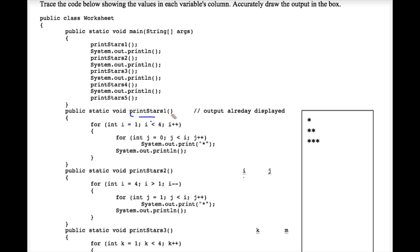I'm going to trace the next piece of code. Let's trace print_stars_2. Because of this system.out.print right here, our cursor is now blinking, not on the very next line of output, but poised and ready to print right there. We did a println which moved us down, and then when the computer executed this system.out.print, we moved further. So this is where we're currently blinking, ready to produce some output.